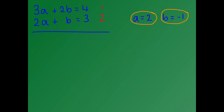We have now found values for both a and b, but we need to do a quick check to ensure that these values are correct. We need to substitute both values into one of the equations, so I'm going to use equation number 2: 2a plus b equals 3. We think that a is 2, so 2 times 2 equals 4. We think that b is minus 1. 4 plus minus 1 should equal 3, and indeed, 4 plus minus 1 does equal 3. So we can be sure that our values are correct.